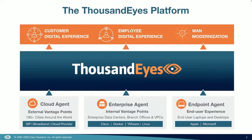The third focuses on WAN modernization. As companies adopt modern technologies such as SD-WAN or cloud access security brokers, making sure that the services they're delivering to their employees, customers, and partners are still performing as well or even better than they were prior to the migration and transition.